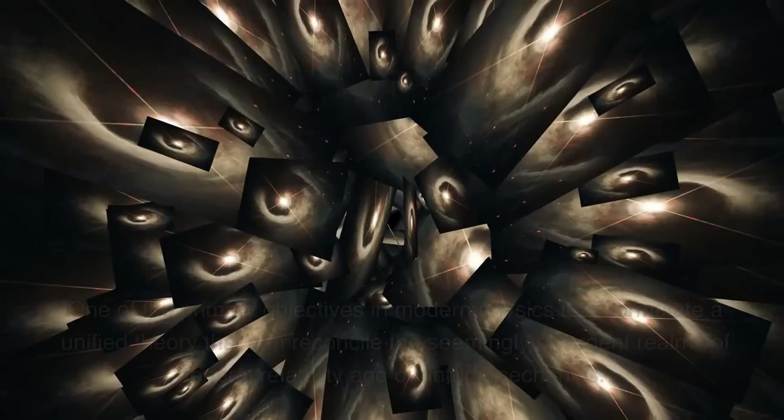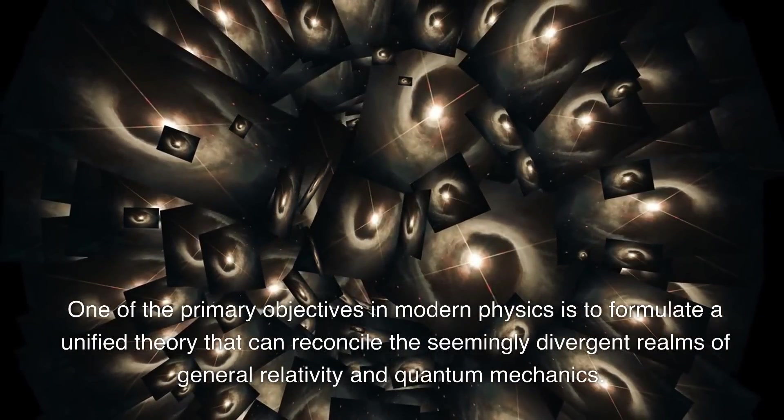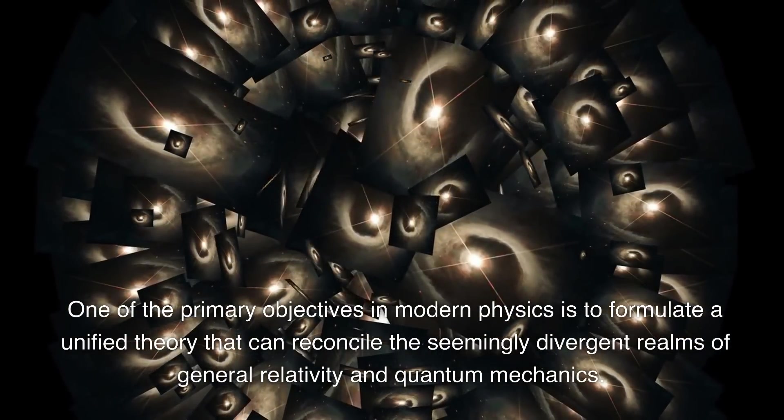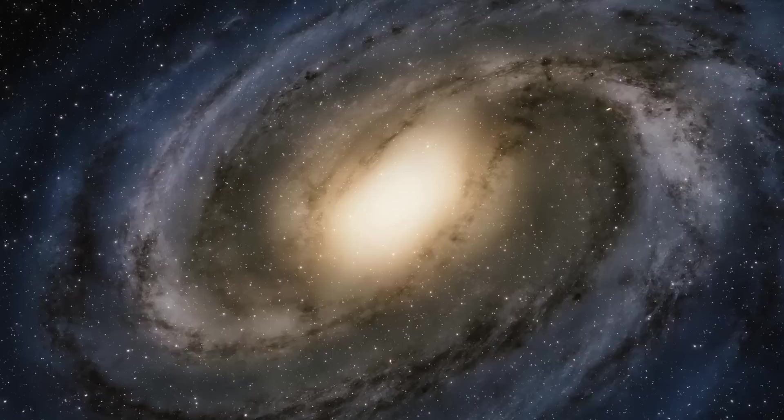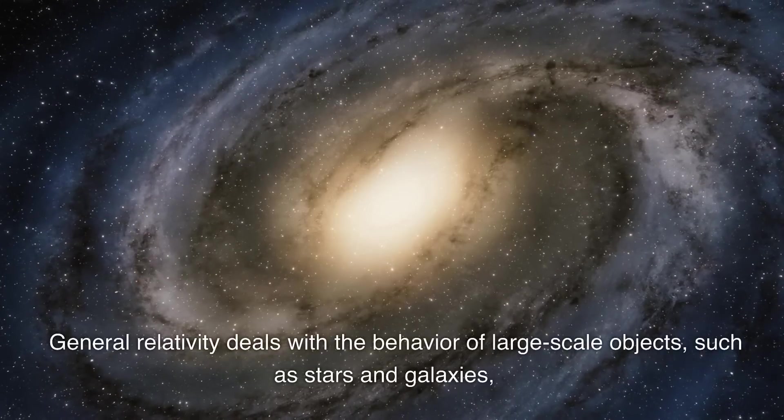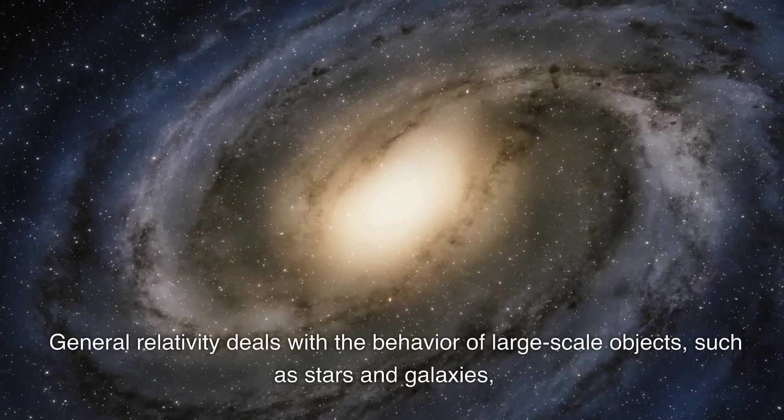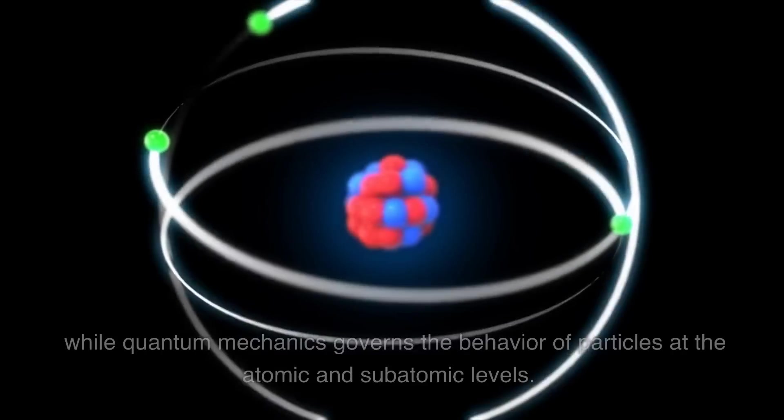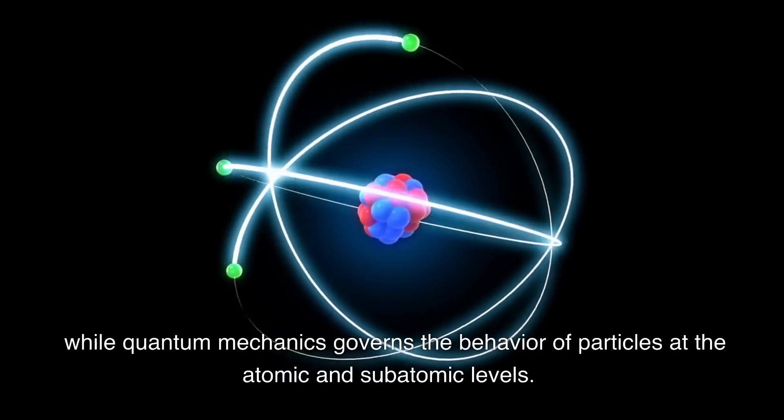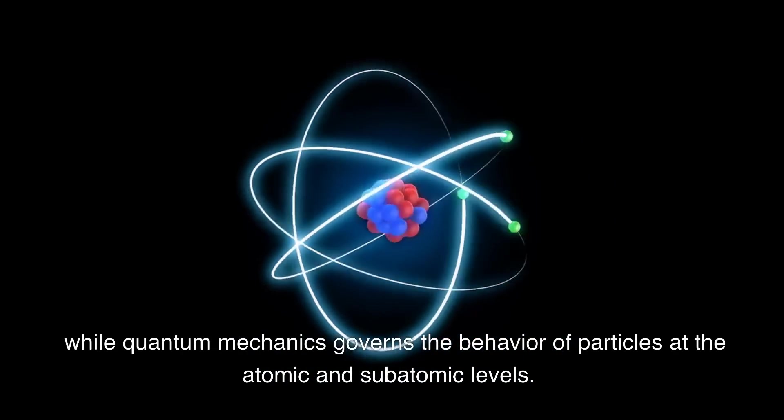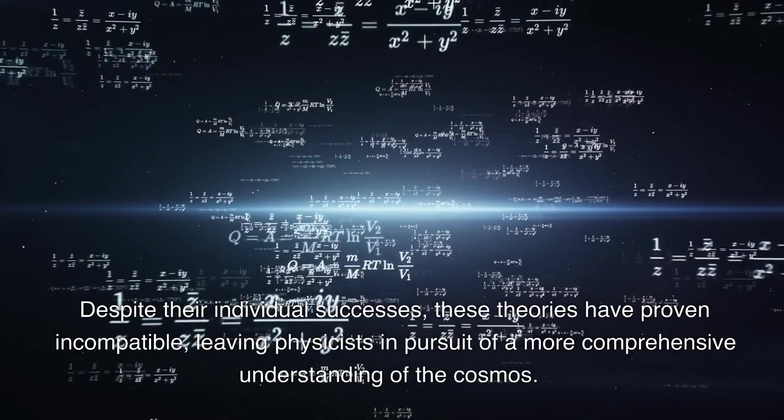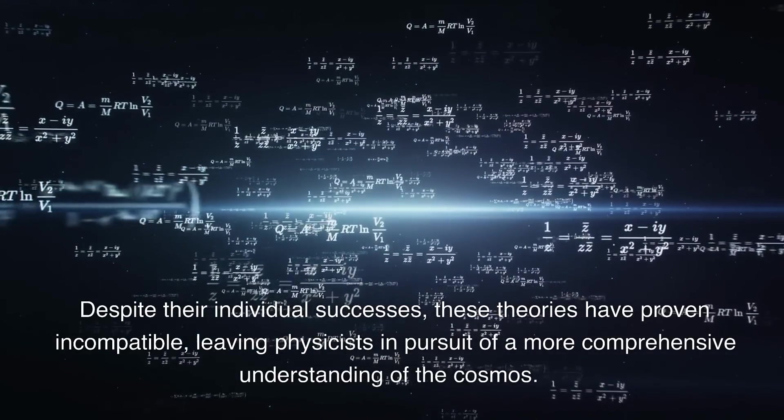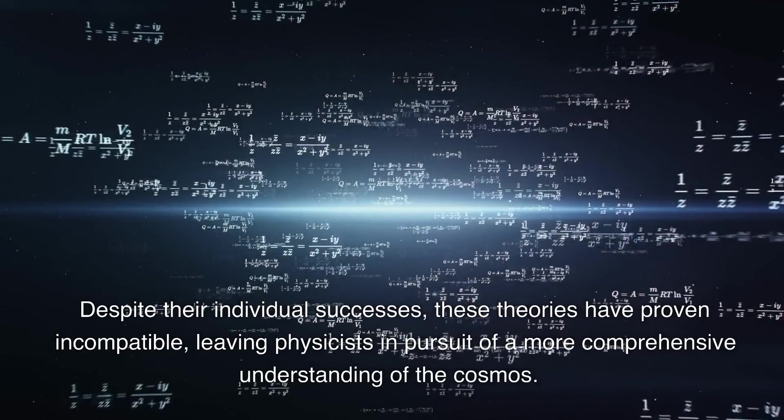One of the primary objectives in modern physics is to formulate a unified theory that can reconcile the seemingly divergent realms of general relativity and quantum mechanics. General relativity deals with the behavior of large-scale objects such as stars and galaxies, while quantum mechanics governs the behavior of particles at the atomic and subatomic levels. Despite their individual success, these theories have proven incompatible, leaving physicists in pursuit of a more comprehensive understanding of the cosmos.